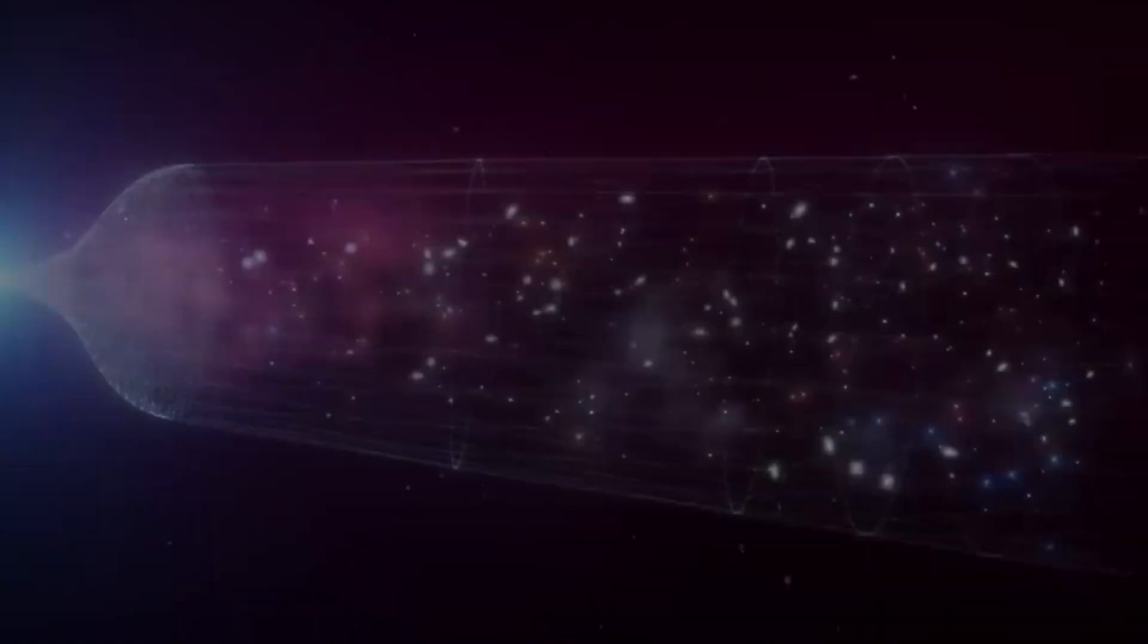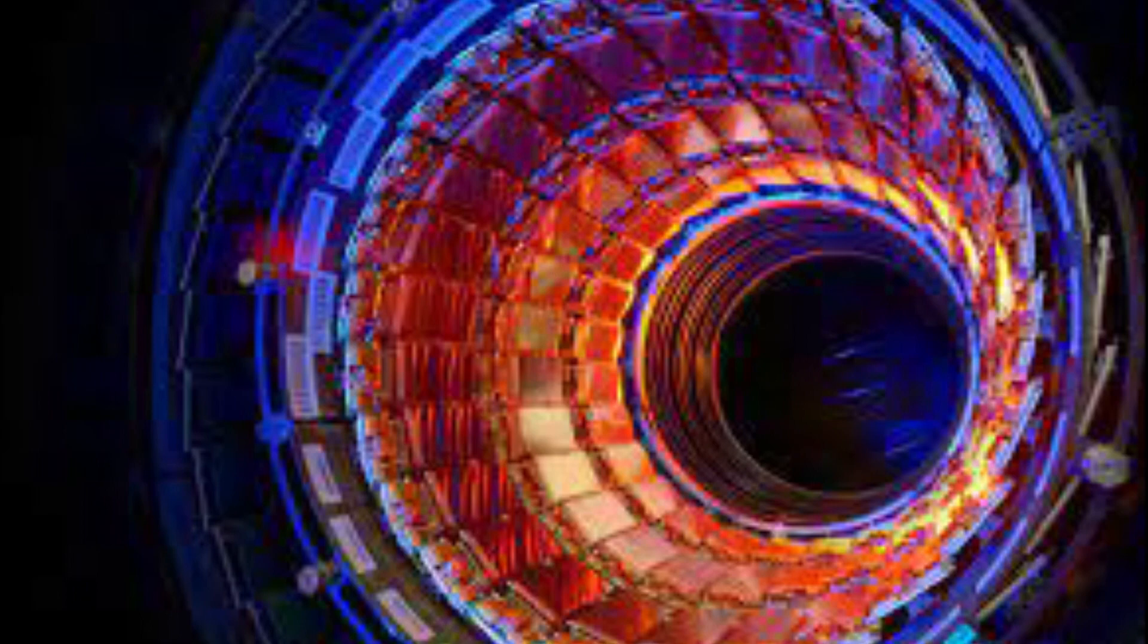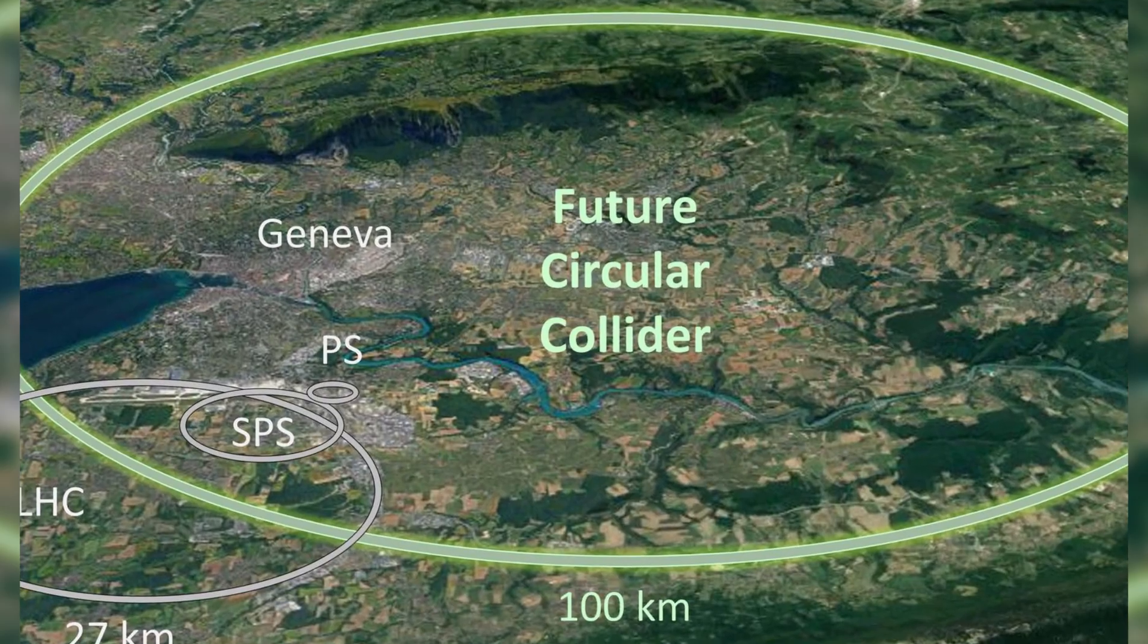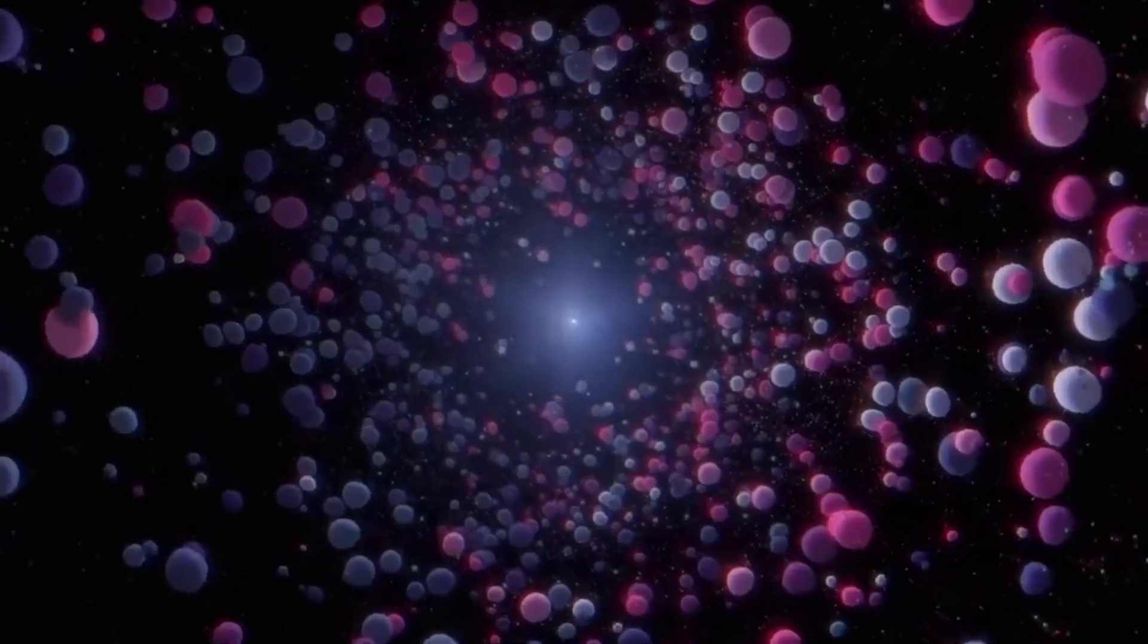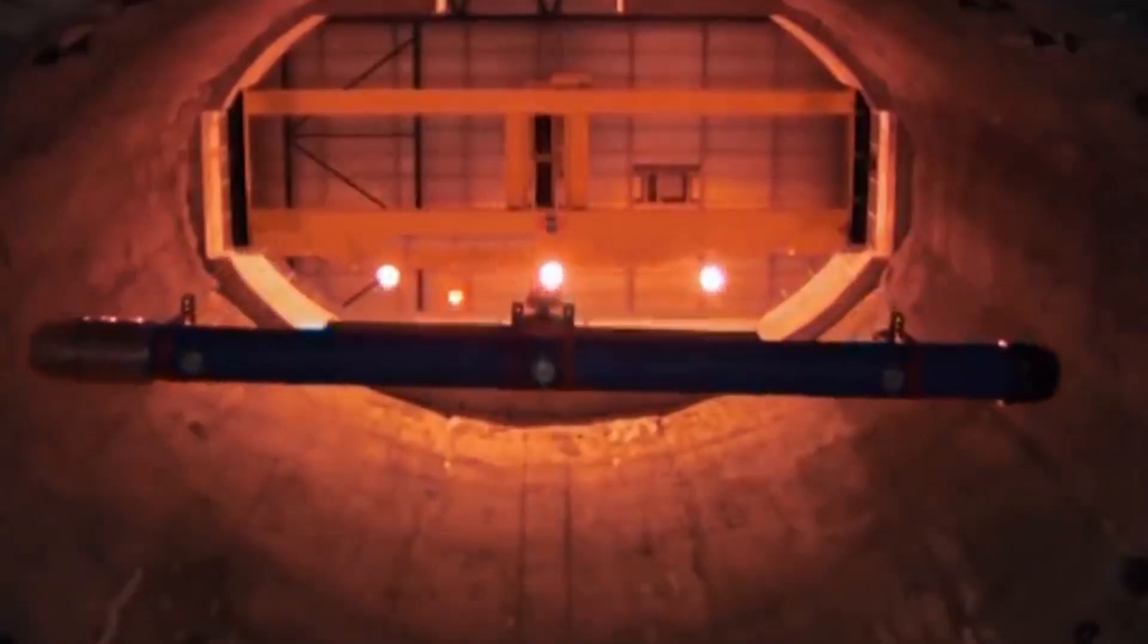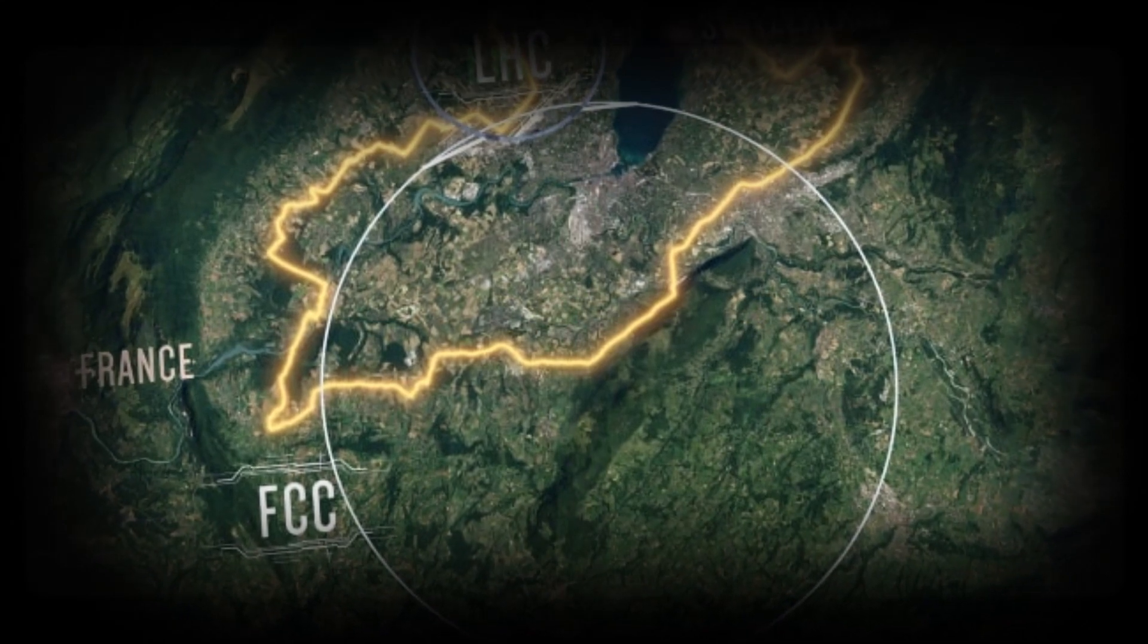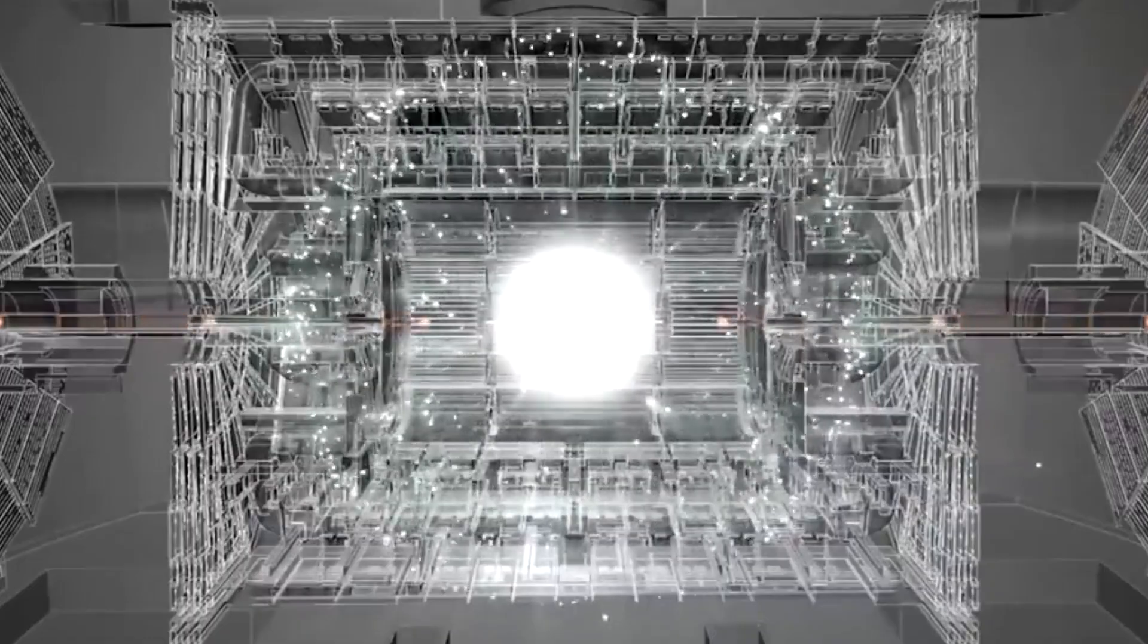The magnets at LHC are cooled to a temperature lower than outer space, 271.3 degrees Celsius below zero. The accelerator is a 27-kilometer ring buried beneath the surface, and it uses thousands of magnets of varying sizes to regulate the beams within. The depth of the excavation is up to 100 meters.